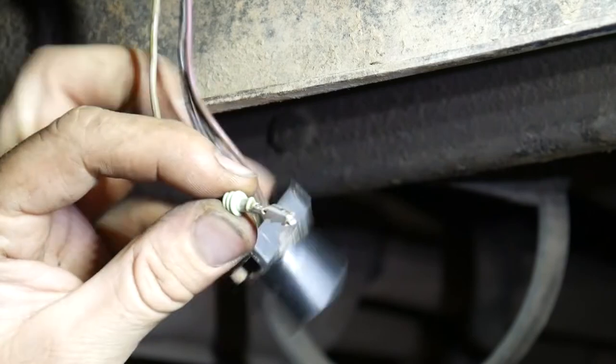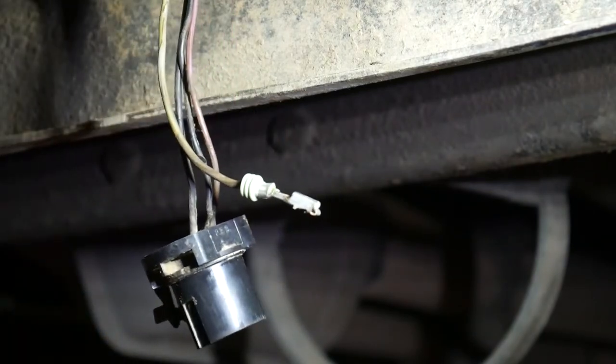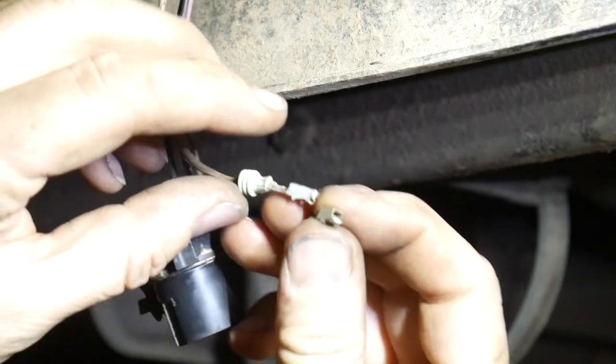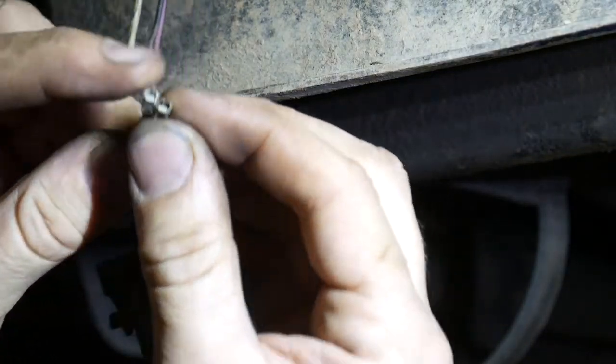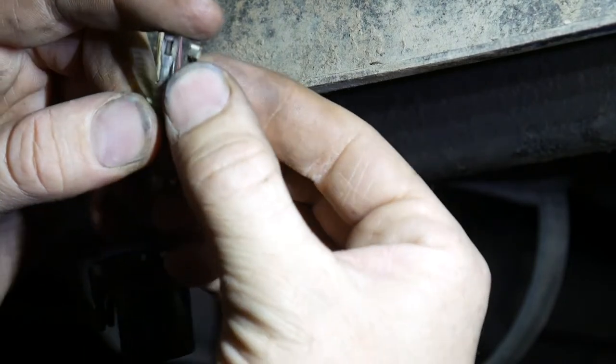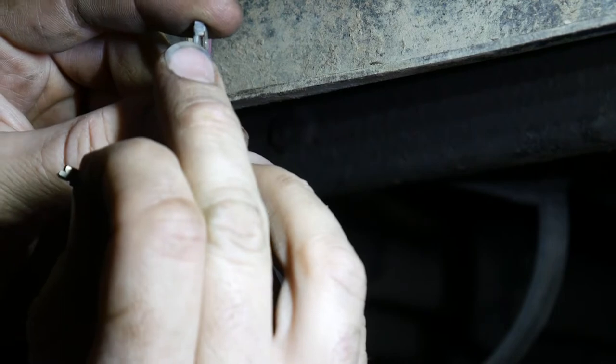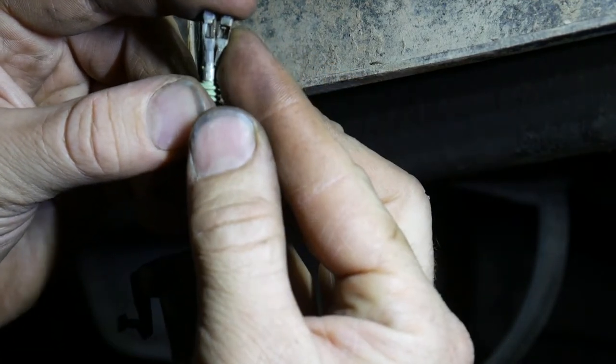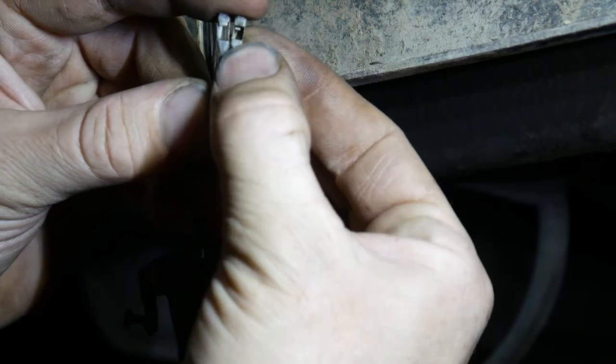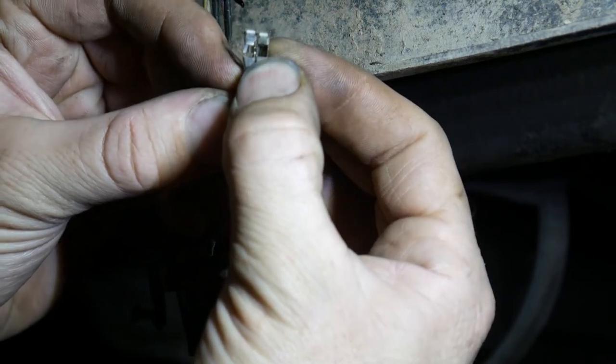So I realized after I crimped this on here that this terminal is slightly different. Very small difference. The size and shape is about the same but the locking mechanism is different. The one I had, which is MetroPak 280 series, had a spring loaded tab right there that locks it in place. And it doesn't use the plastic retainer like the one that I released. What I did is I just cut that spring loaded tab off at the same location.